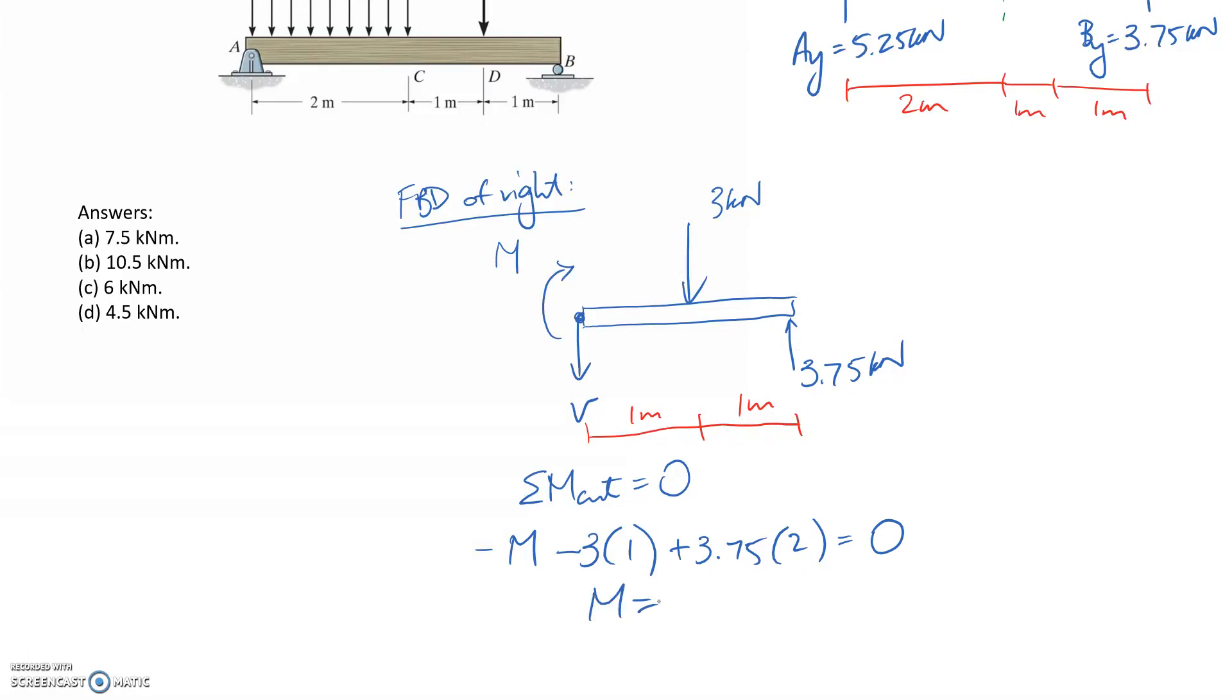We go through and solve for M. This is actually going to come out to negative 4.5. The units - I measured my forces here in kilonewtons and all my distances were in meters, so it's kilonewton meters.